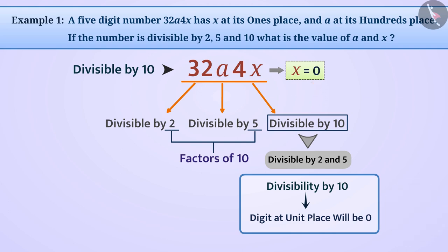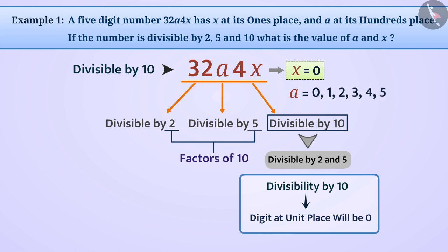Since the divisibility of a number by ten depends only on the digit at the ones place, the digits at other places don't matter. This means we can take the value of a as any of these digits: 0, 1, 2, 3, 4, 5, 6, 7, 8, and 9.